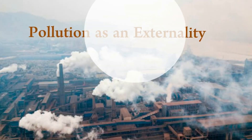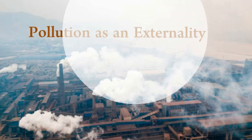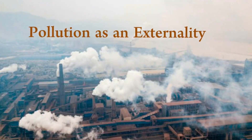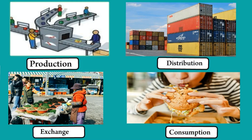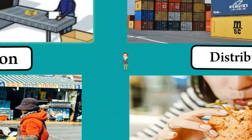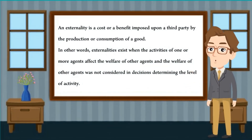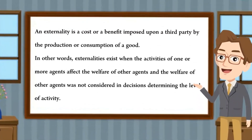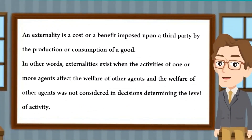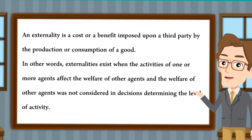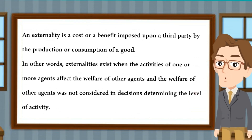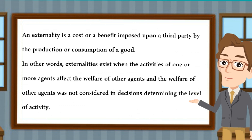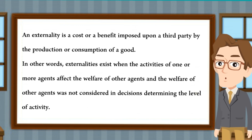In this video, we are going to discuss the topic of pollution as an externality. Externalities are common in almost every area of economic activity. An externality is a cost or a benefit imposed upon a third party by the production or consumption of a good. In other words, externalities exist when the activities of one or more agents affect the welfare of other agents, and the welfare of other agents was not considered in decisions determining the level of activity.